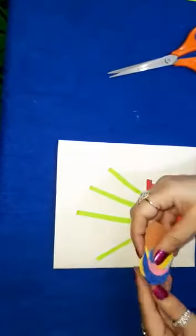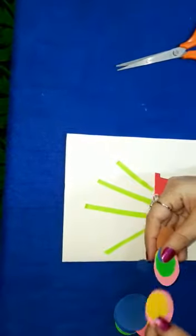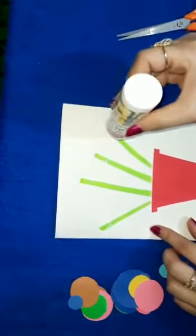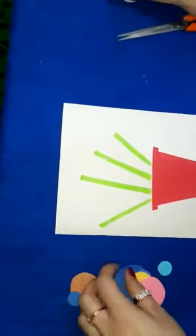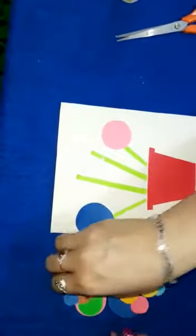Now, we are going to make flowers with these different colors and circles. Again, apply some glue. Paste the circles.